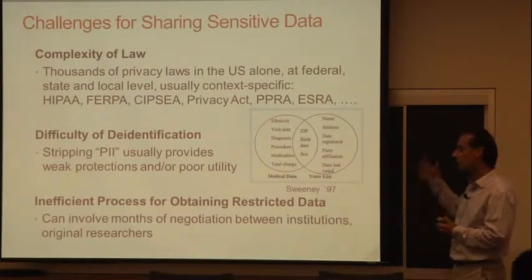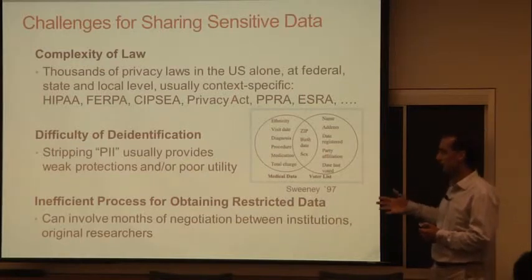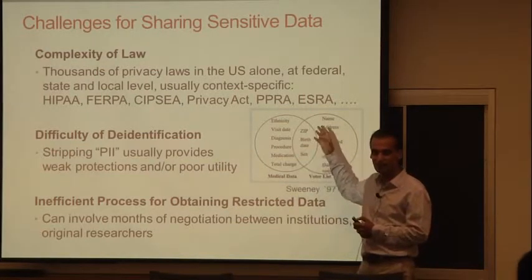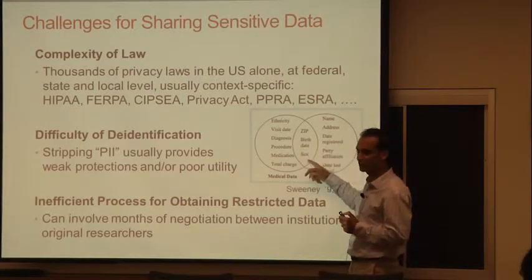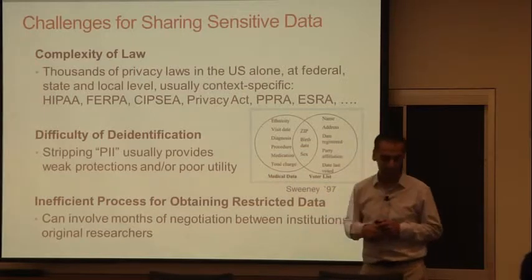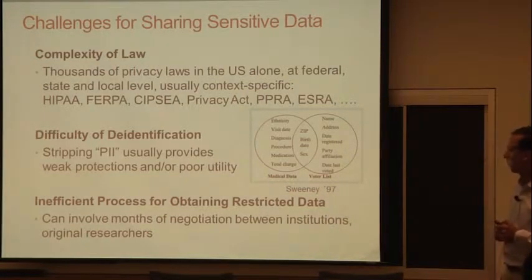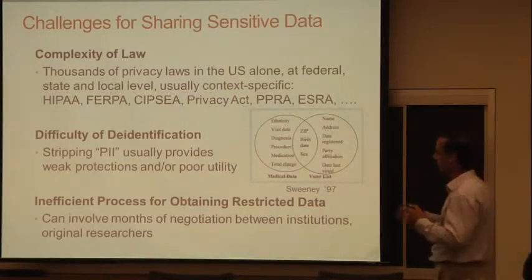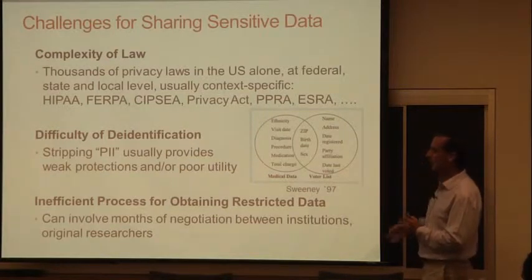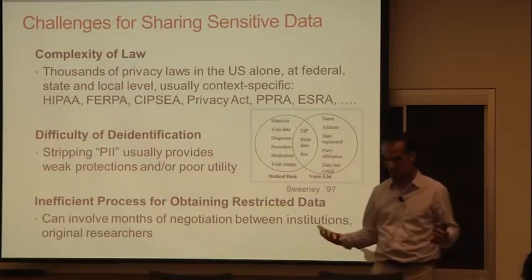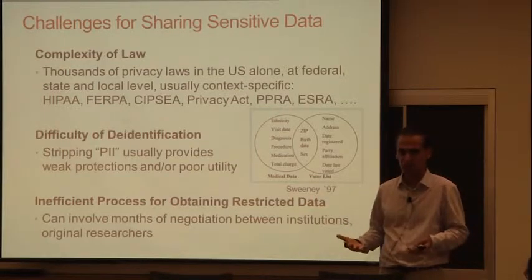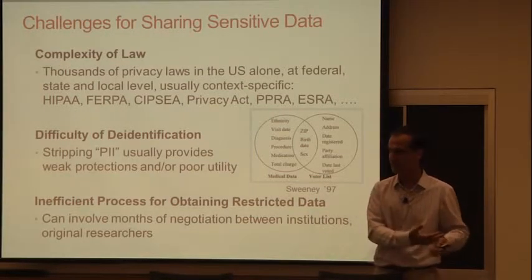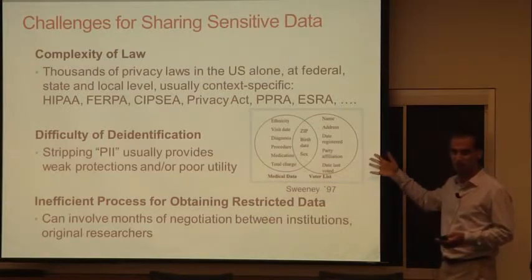Since then there have been many more examples of this type, often much more subtle. It's not just a matter of the obvious things we traditionally think of as identifying information. People have shown that all kinds of subtle things — like the dates you watched a particular movie and reviewed it on the Internet Movie Database — could help identify you in an anonymized movie rental database. That was shown for the Netflix challenge, and there have been many other examples, showing that de-identification is a really hard task. A lay researcher with no expertise in privacy can't be expected to do de-identification right.